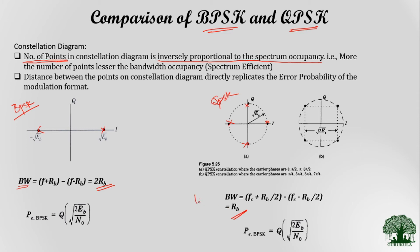The second inference from the constellation diagram is the distance between points, which is directly proportional to error probability. In both BPSK and QPSK, the distance between adjacent points remains the same. This is why both modulations end up with the same error probability equation. This comparison clearly demonstrates that QPSK is more spectrum efficient than BPSK while maintaining the same error performance.